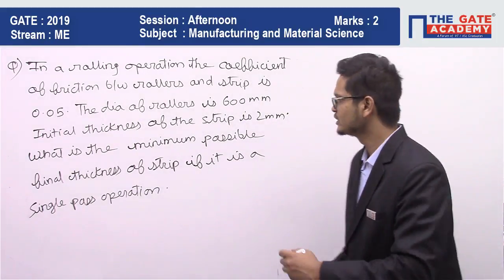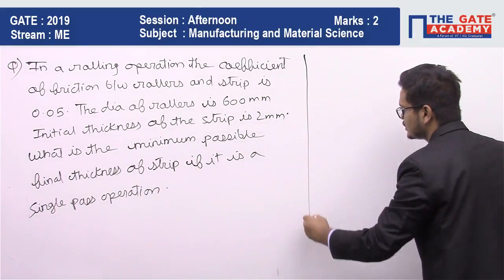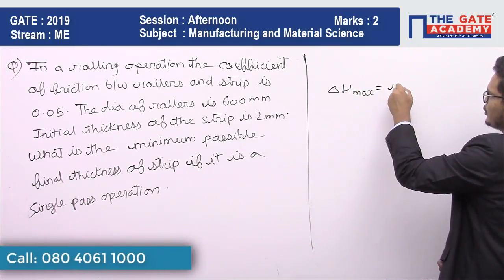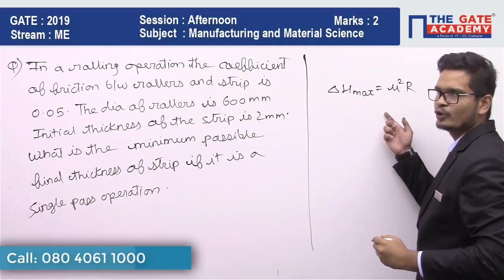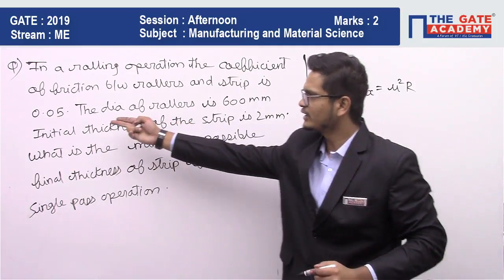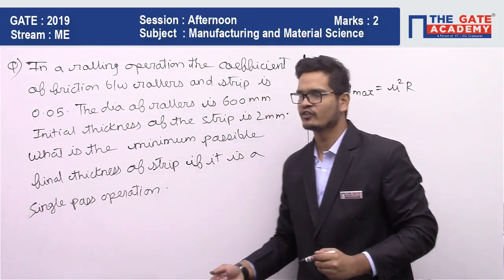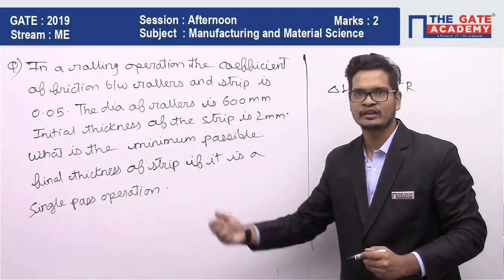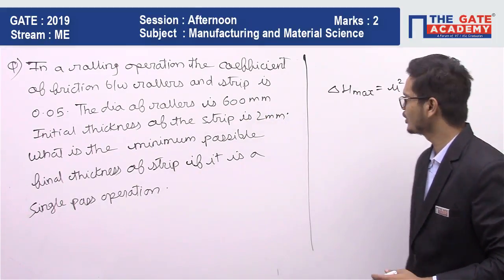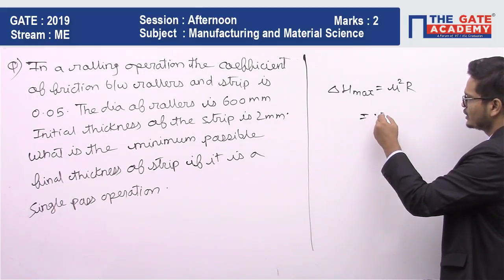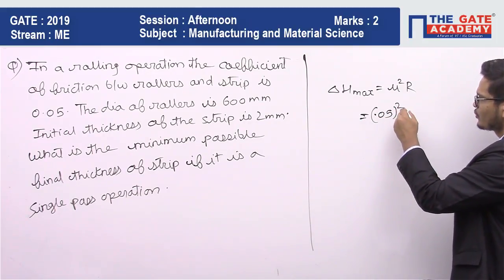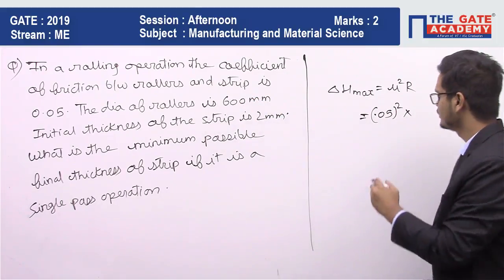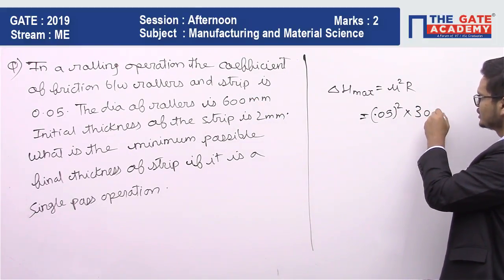We write that as delta H max. It is mu squared into R. Mu is coefficient of friction, which is directly given to us as 0.05. R is the roller radius — they have given us the diameter, so the roller radius we can get from there. So: 0.05 squared into radius, that is 600 divided by 2, so it becomes 300.